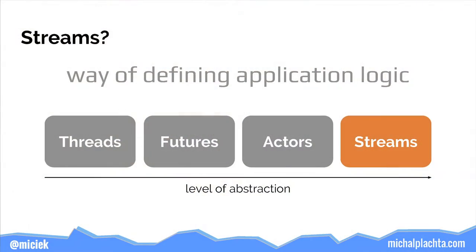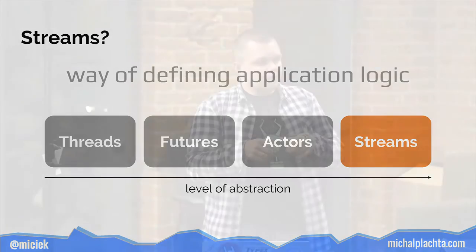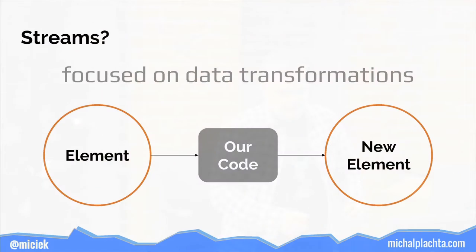Let's prepare the battlefield. What are streams? There are four things to share. The most important is that streams are another way of defining application logic — a different way. It's also a concurrency model. From the four concurrency models on the slide, this one is the most abstract, different in that you are focusing only on data transformations.